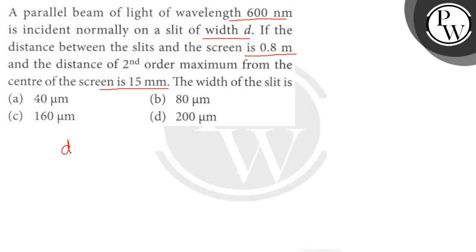We have to find the small d. The distance between the slit and the screen is given as capital D equals 0.8 meter. The lambda is given as 600 nanometer, so let's change it into meter: 600 times 10 to the power minus 9 meter.